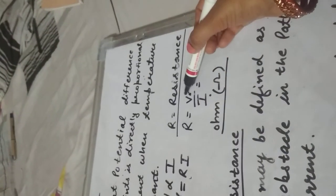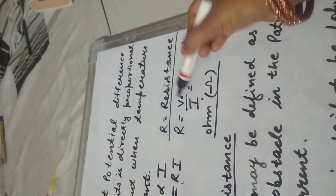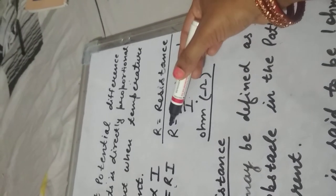R की value 1 कब होगी? जब potential difference की value 1 volt और current की value 1 Ampere होगी, तो resistance 1 Ohm हो जाएगा. Resistance is said to be 1 Ohm when potential difference is 1 volt and current is 1 Ampere. So, what we have discussed today? We have discussed today Ohm's law, resistance, and its definition.